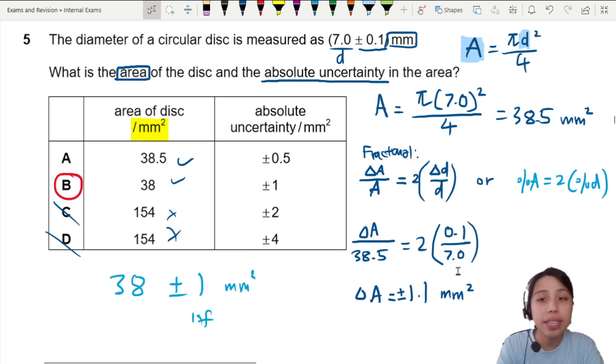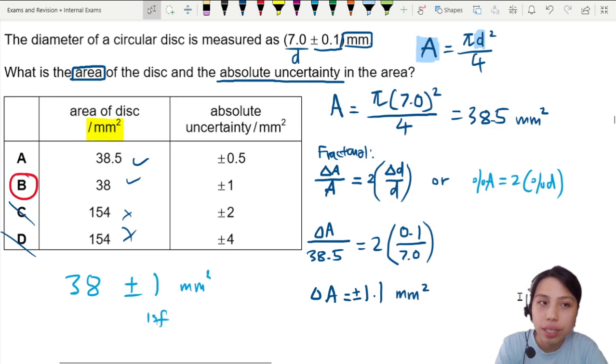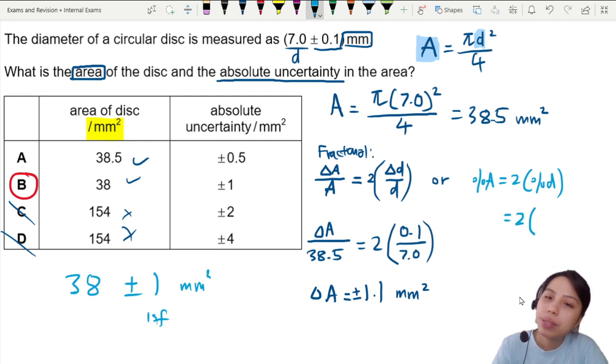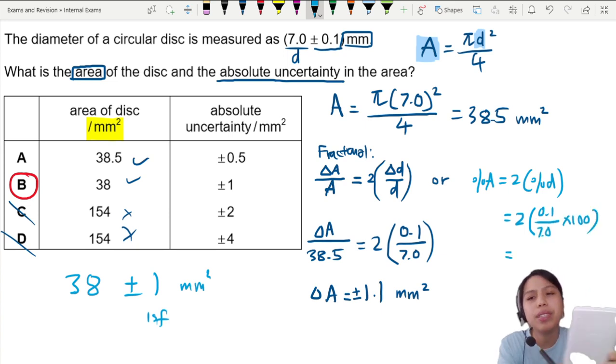By the way, for those of you who chose to use percentage, you can also use percentage. Let me show you very quickly how the working would look like. So to find percentage, this would be 2 times 0.1 over 7 times 100 to convert to percent. How many percent is that?